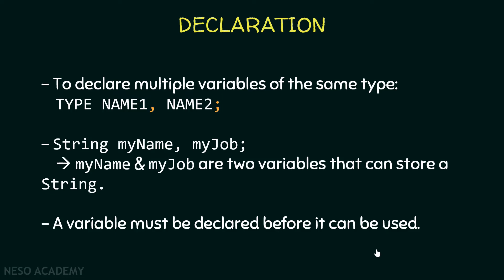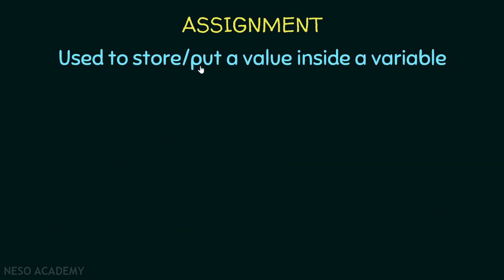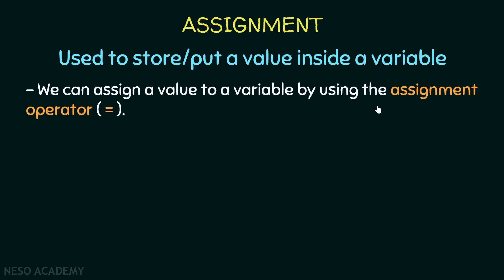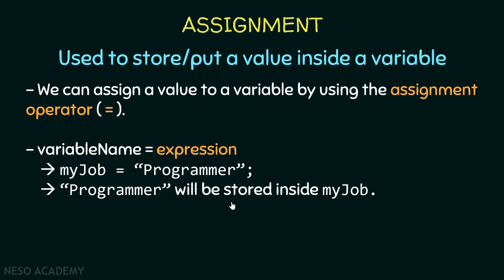Now let's see how we can put some data in a variable — we'll talk about assignment. Assignment is used to store or put a value inside a variable. We can assign a value to a variable by using the assignment operator, which is the equal sign. We put the variable name, then the equal sign, then the expression. For example, we are saying the variable myJob will be equal to this string, terminating the statement with a semicolon. So the string "programmer" will be stored inside the variable myJob using the assignment operator.